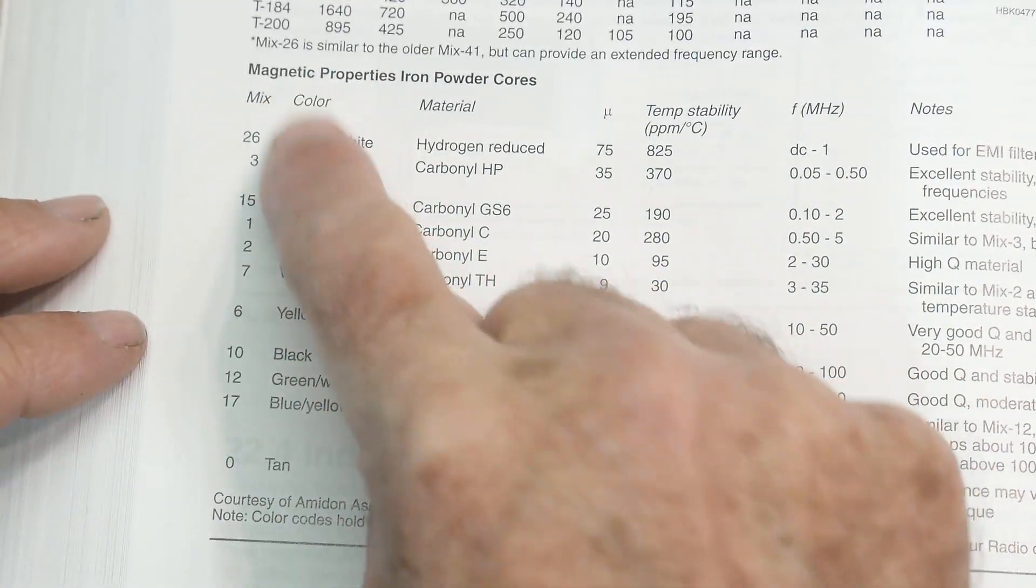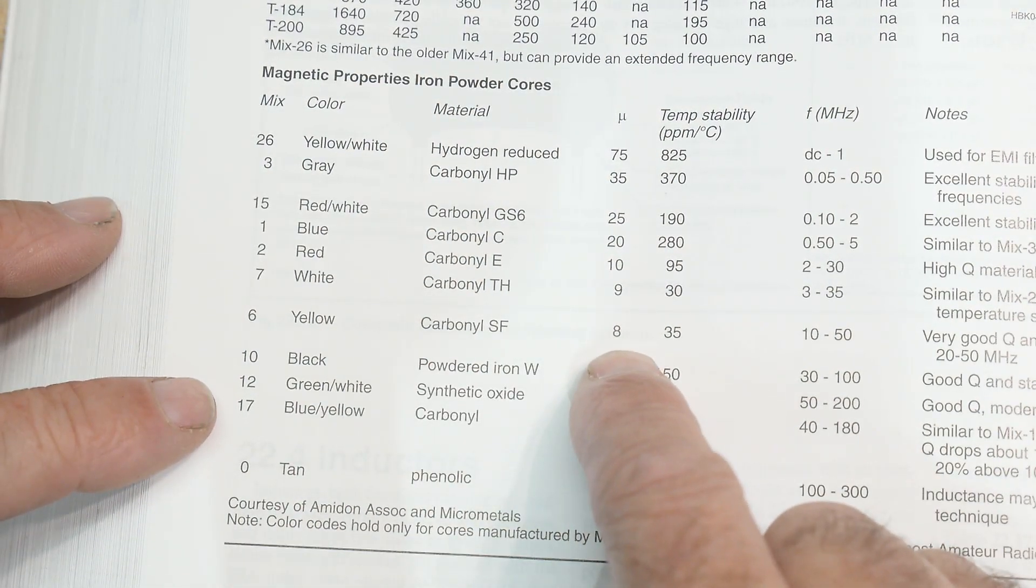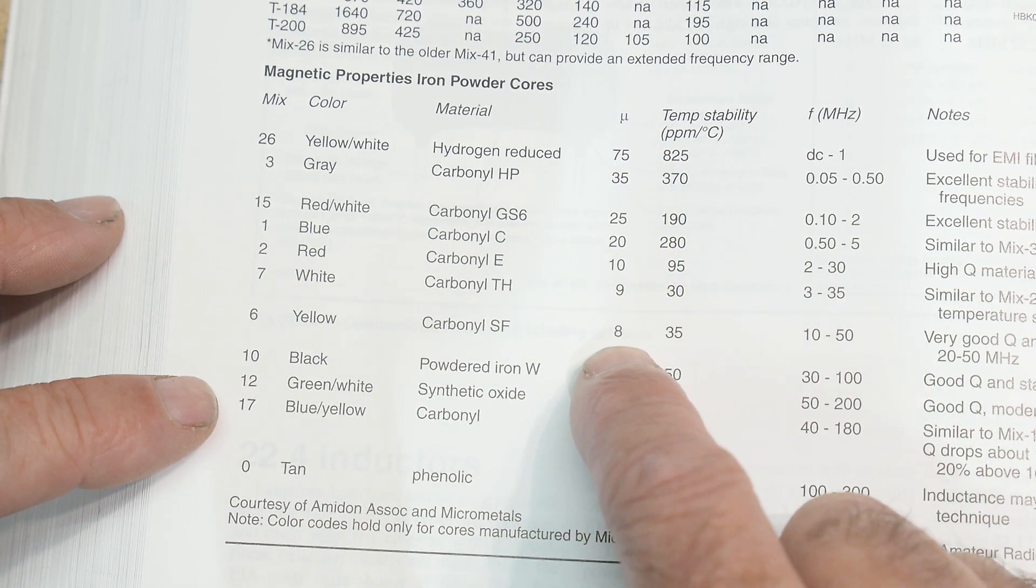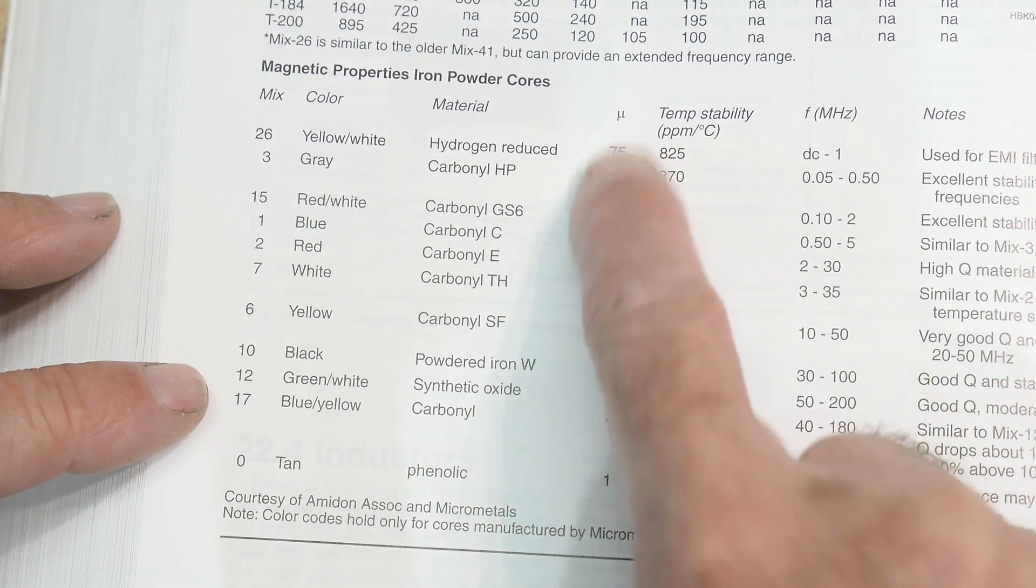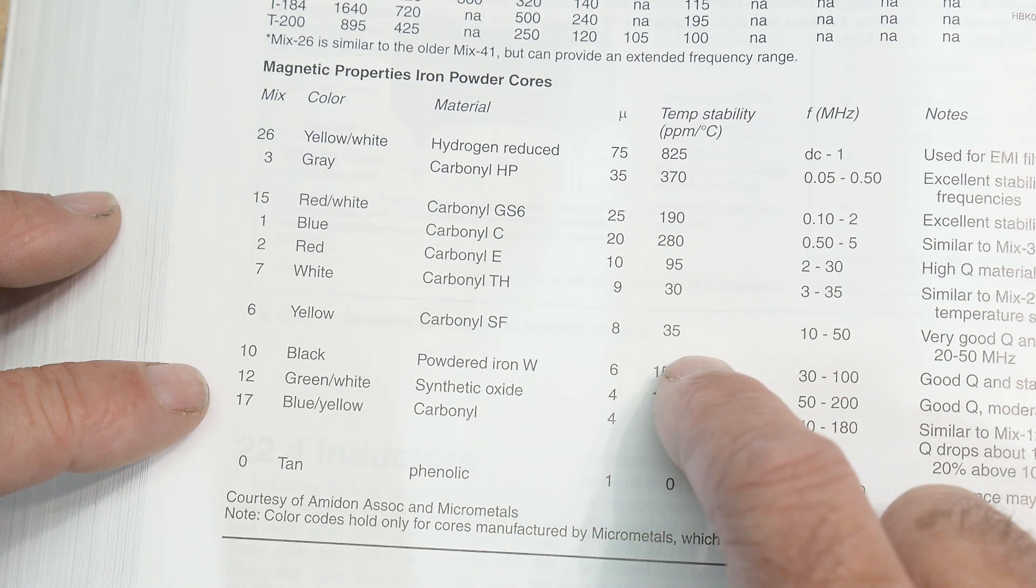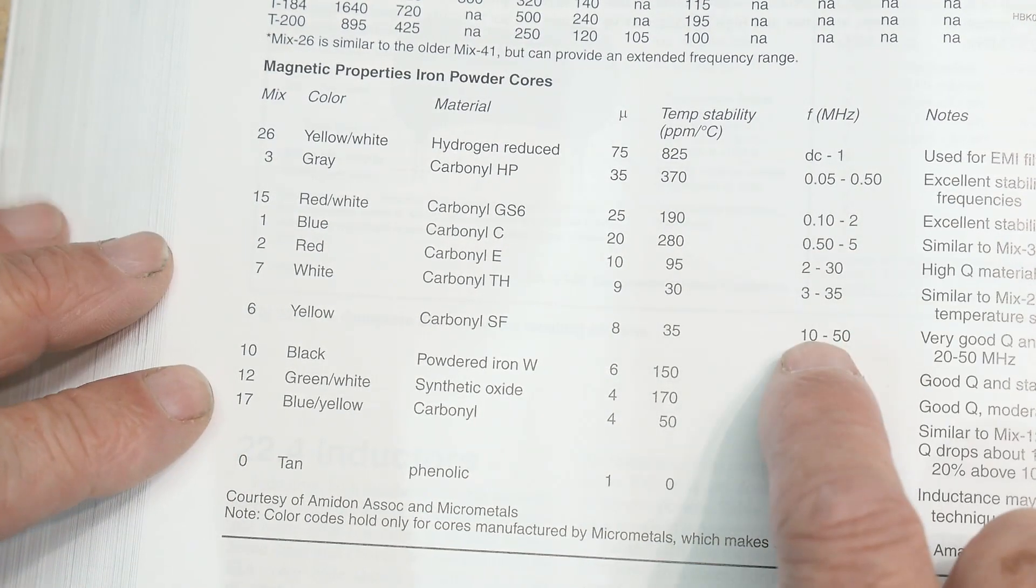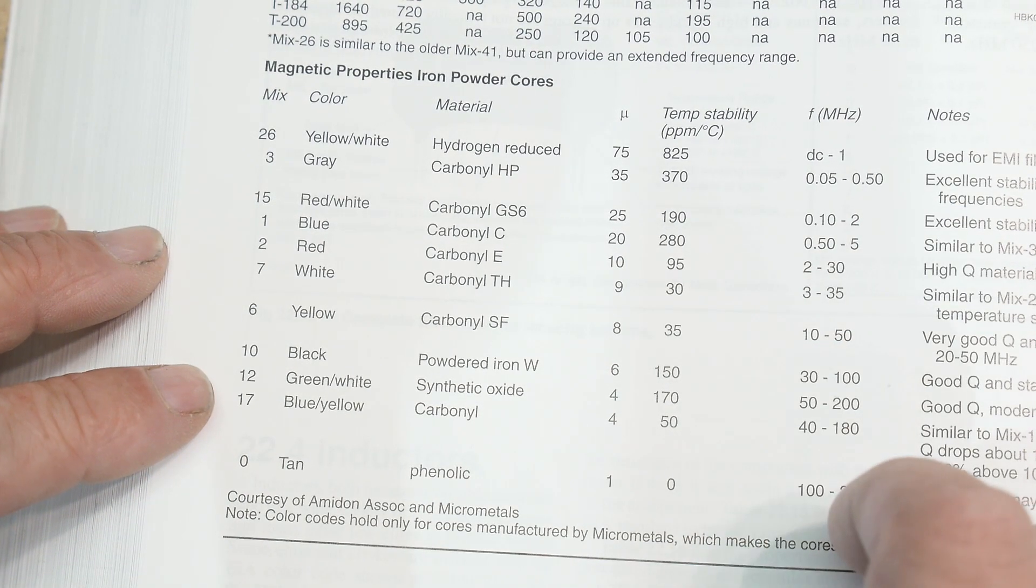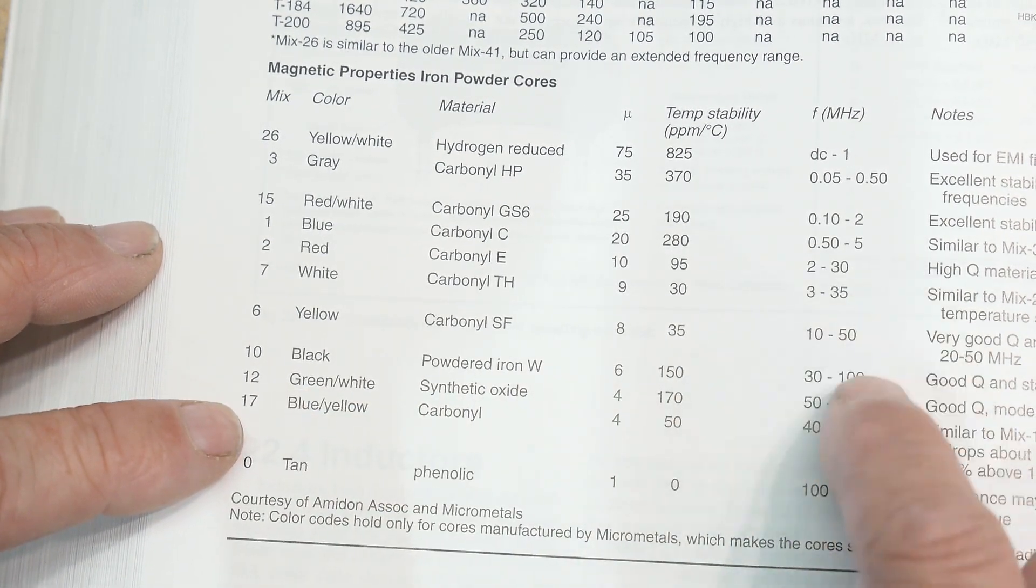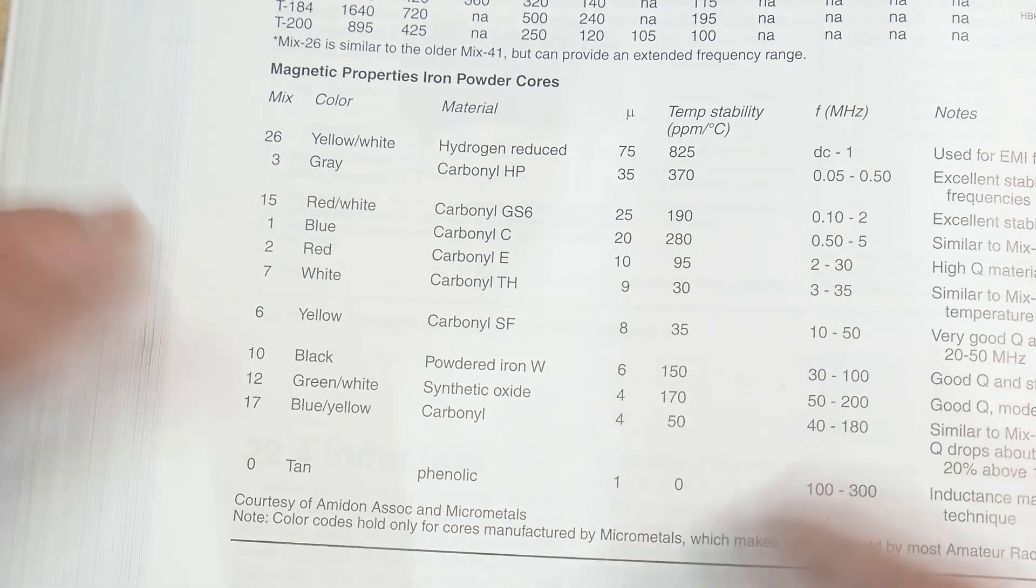It talks about colors of cores. It says yellow is type 6 and it has a permeability of 8. It's good for 10 to 50 megahertz. If I want to do two meters, I'm going to have to get something that'll run up to 200 megahertz; past 100-200 megahertz they start to be lossy at higher frequencies.